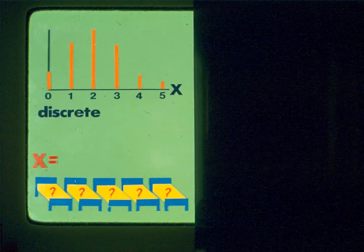Returning to the variable x of our first example — the number of surgical patients experiencing wound disruption out of 5 — x is an example of a discrete random variable whose distribution can be represented by a line graph. The lines are not connected because only whole numbers of patients are possible; no values like one and a half patients with wound disruption are possible.